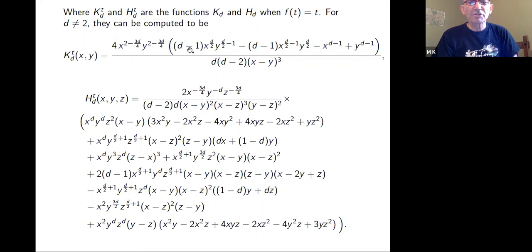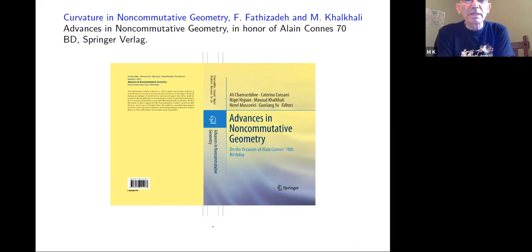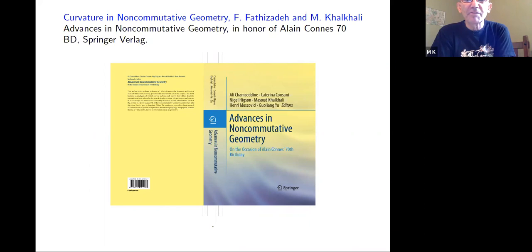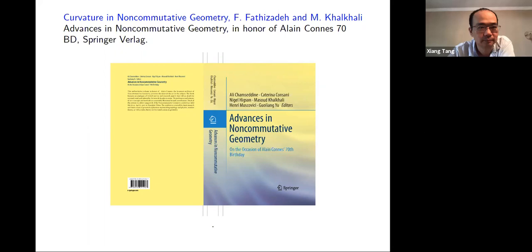Explicit formulas in this version — because we are using Newton divided differences — the two-variable and three-variable functions come out to be algebraic functions, and it's been worked out. Maybe I have a few minutes, but just do a little bit of advertisement for the book that just published: 'Advances in Noncommutative Geometry' in honor of Alain. I have a survey paper there with Farzad, and there are a lot of other beautiful articles. This is maybe a good point to finish. I thank you all for your patience and for being in the talk. Thank you.